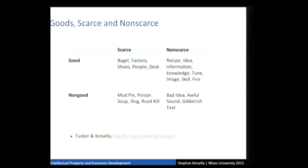Jeff Tucker and I wrote an article trying to classify the role of knowledge in the structure of human action and in economic theory, especially Austrian theory. You can think of the means you use to achieve your ends as scarce goods, but think of knowledge — like recipes, ideas, information — as non-scarce goods. Scarce non-goods would be like a mud pie or poison — scarce but not useful. A non-scarce non-good would be something like a bad idea or gibberish text. This helps contrast knowledge with scarce resources.